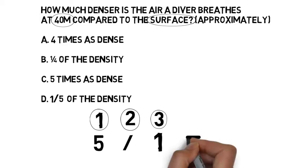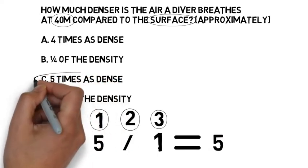At 40 metres, the density of the air would be 5 times as much. Answer C.